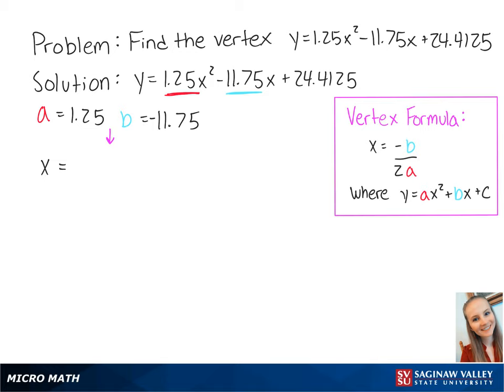This gives us x equals minus negative 11.75 over 2 times 1.25, which is equal to 4.7. Now we plug 4.7 into the original equation.